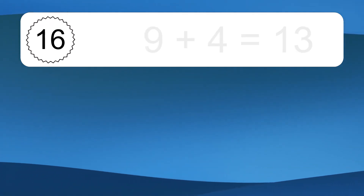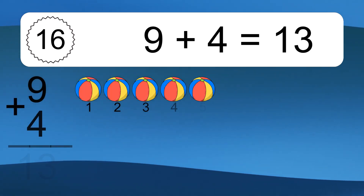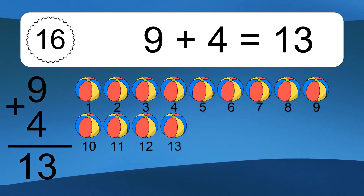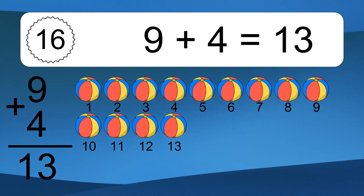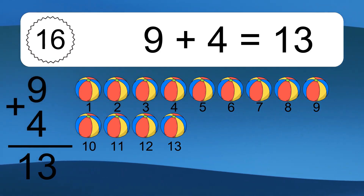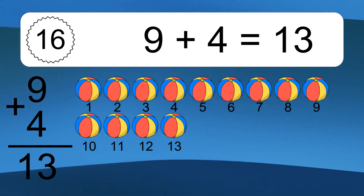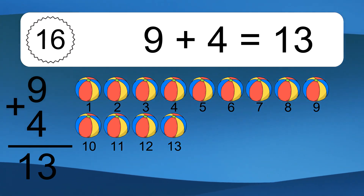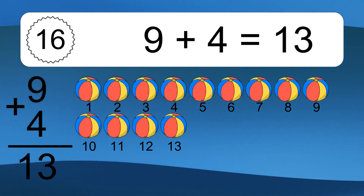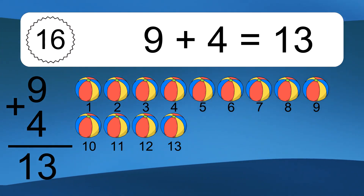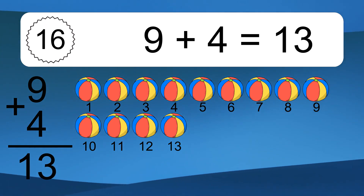9 plus 4 equals what? 9 plus 4 equals 13. Let's count it: 1, 2, 3, 4, 5, 6, 7, 8, 9, 10, 11, 12, 13.